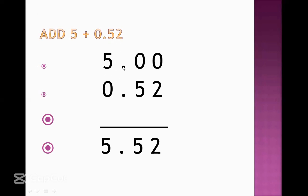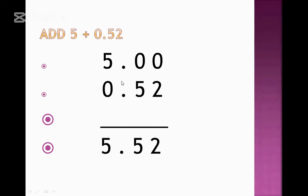Since the decimal number has two digits after the point, we place a point after the whole number 5 and add two zeros as placeholders. Look at the cursor: we have 5.00. Then we write the decimal number 0.52 underneath, aligning the decimal points. Now we add: 0 plus 2 equals 2, 0 plus 5 equals 5, and 5 plus 0 equals 5. The result is 5.52.